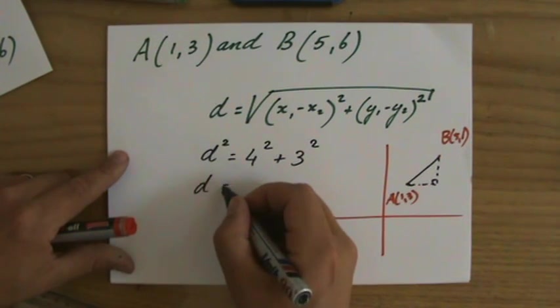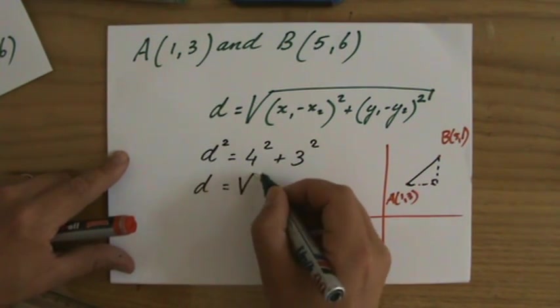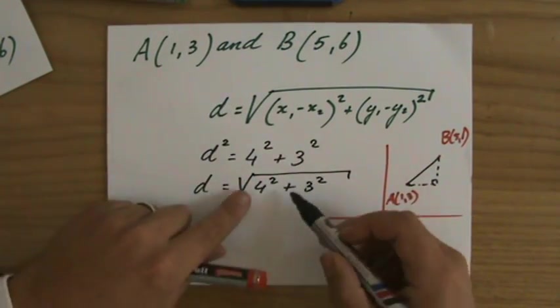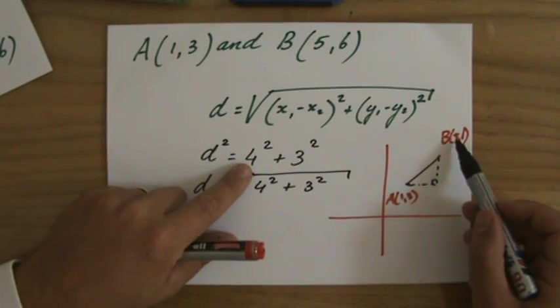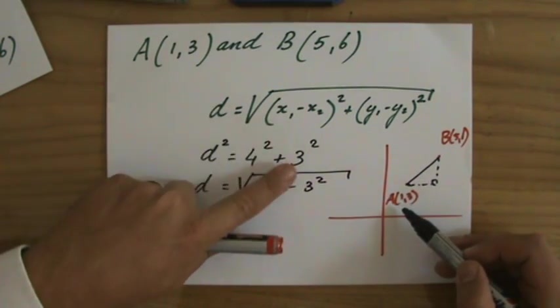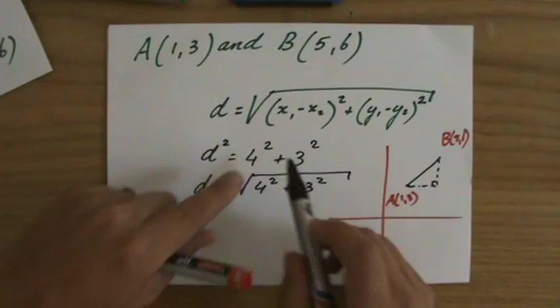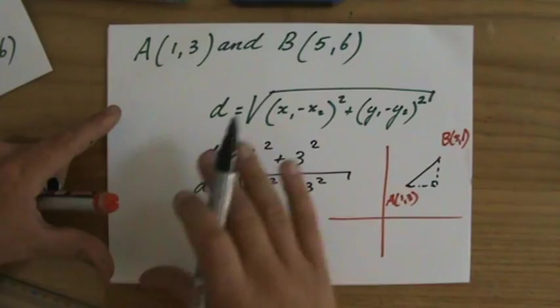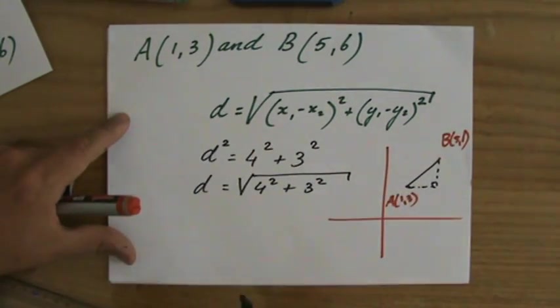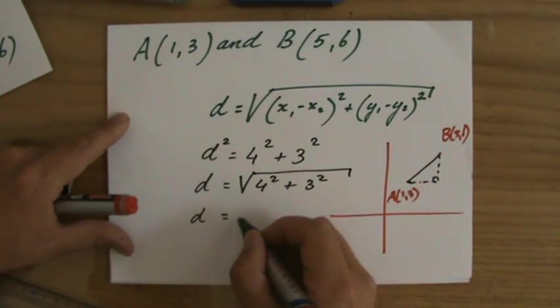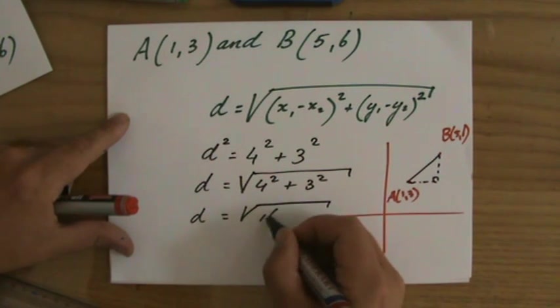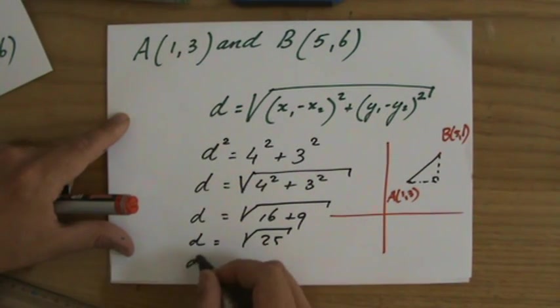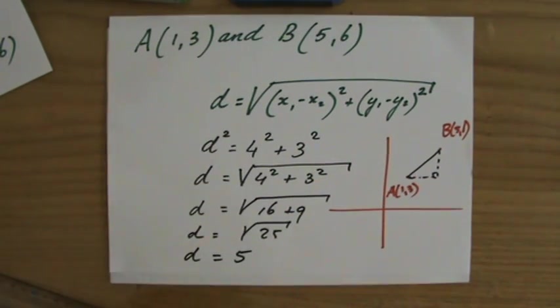And that makes that the distance is the square root of 4 squared plus 3 squared. I got that 4 to do 5 minus 1, I got the 3 to do 6 minus 3, but I do not have to remember that formula, because if I already understand Pythagoras theorem, I can work it out without remembering anything. So the distance is the square root of 16 plus 9, which is the square root of 25, the distance is 5.